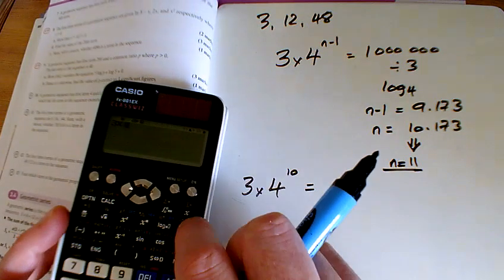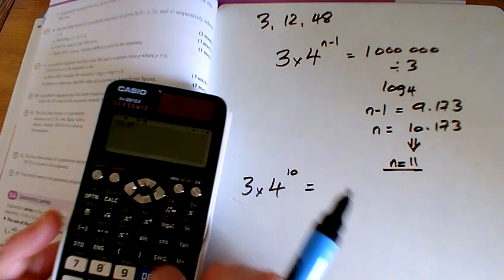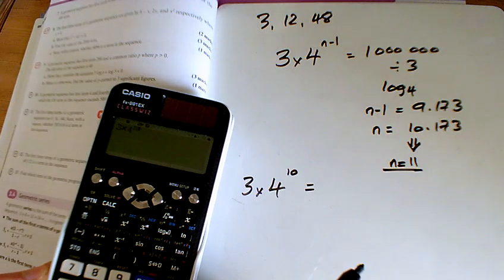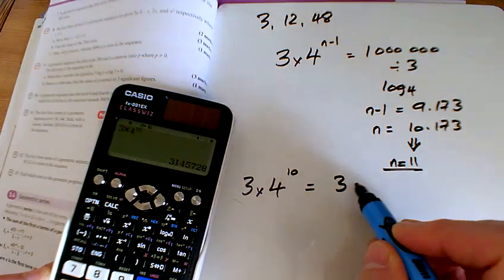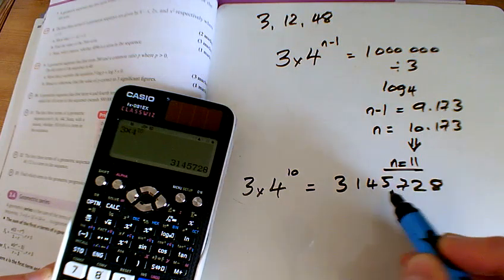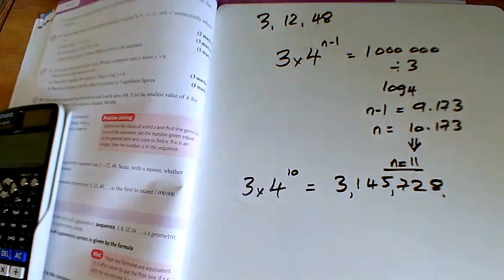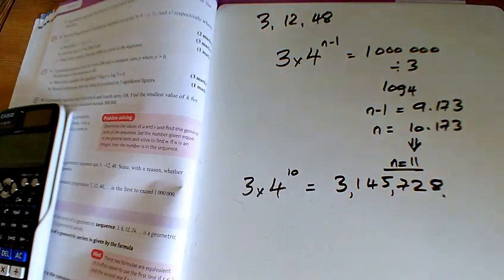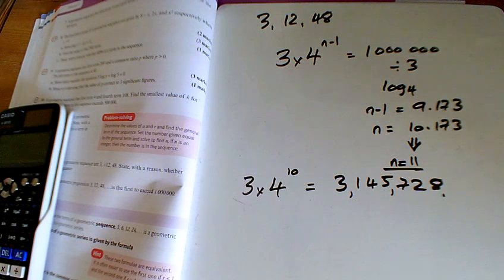by 4 to the power of 10 gives us 3, well, straight into the 3 million. It doesn't hang about, does it, these geometric sequences. 3,145,728.